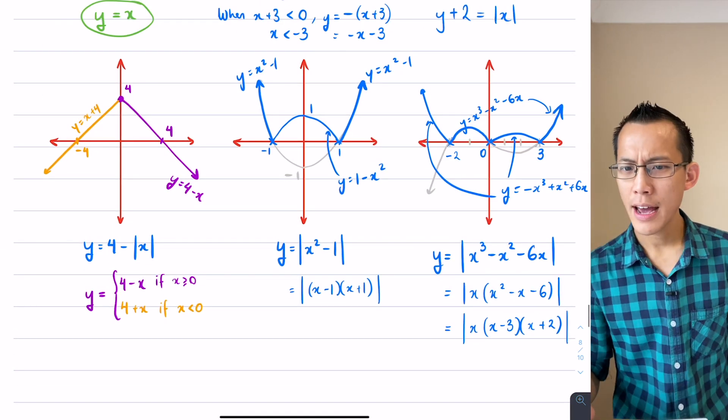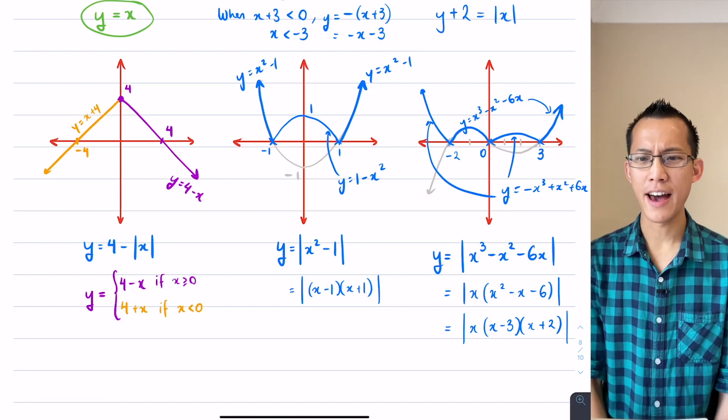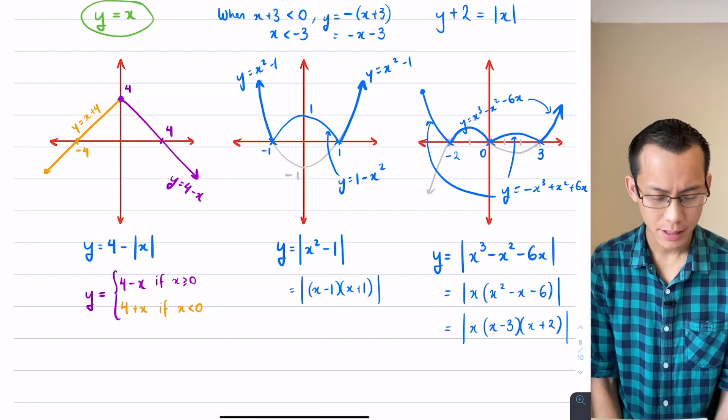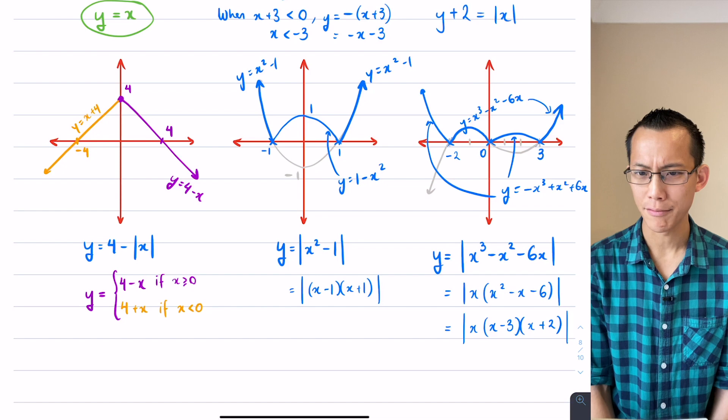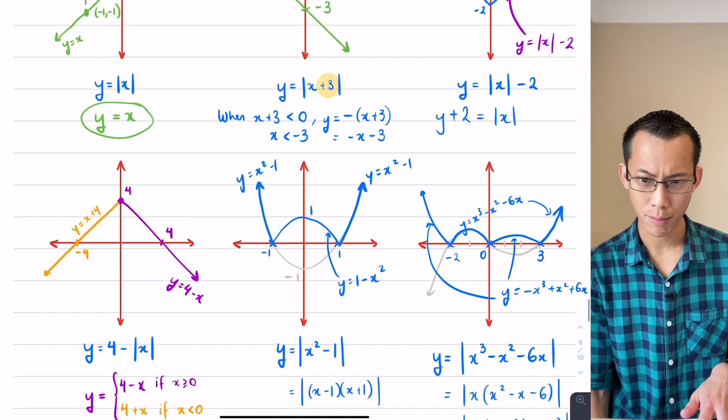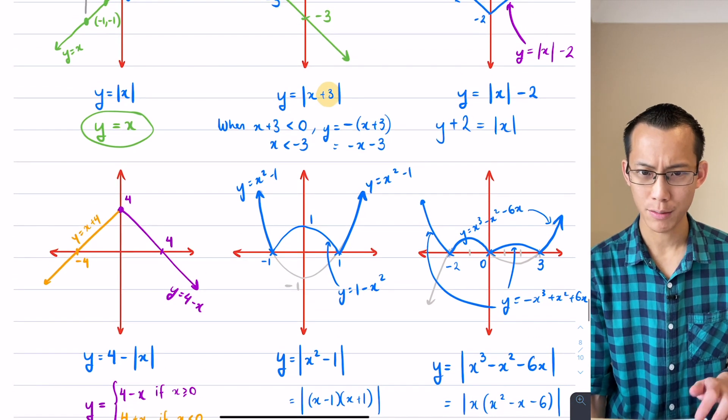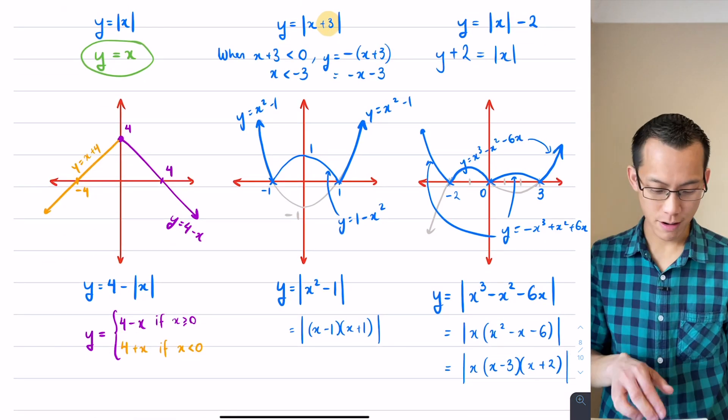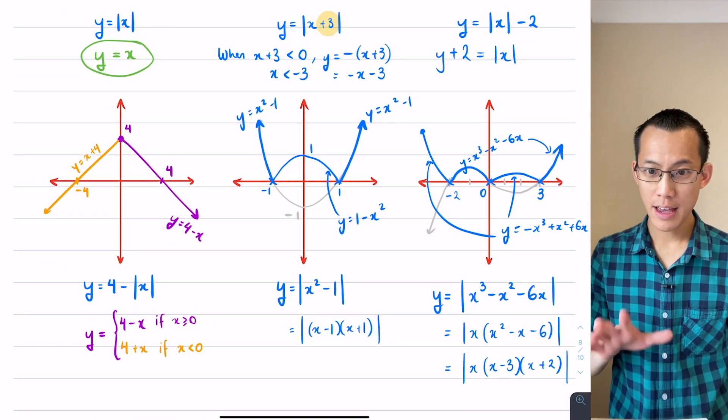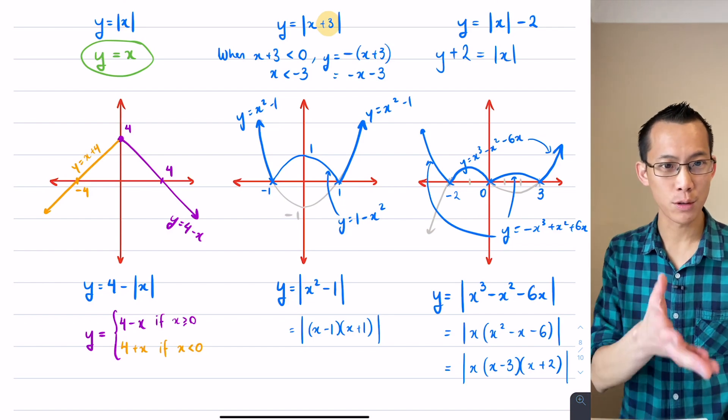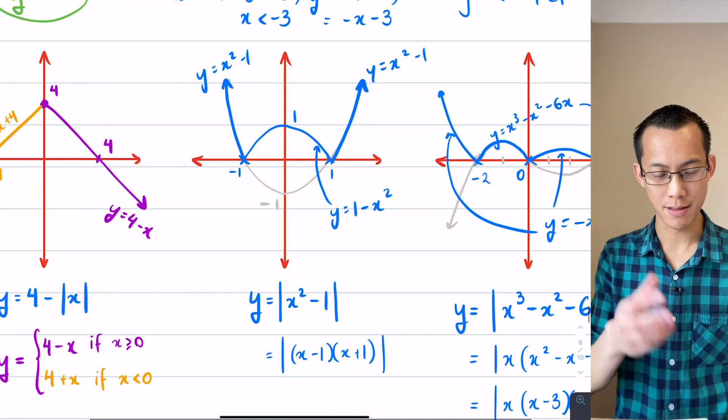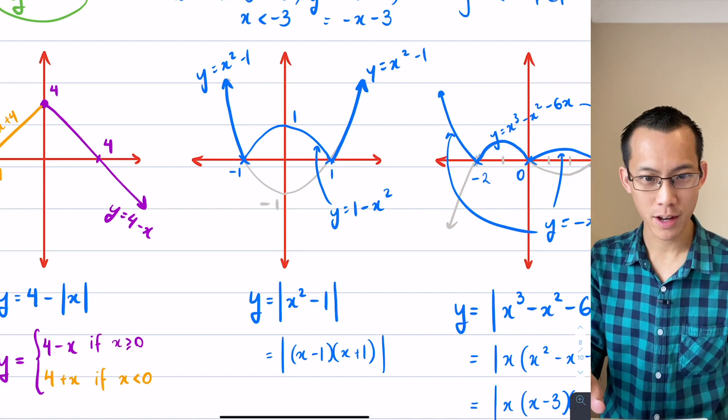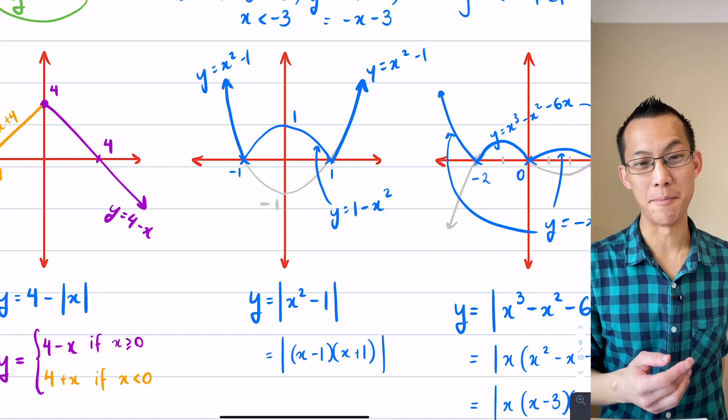I've got a question from Abby in the chat about something going to the right. Which graph are you looking at Abby? Is it the parabola or the cubic? The middle one, okay. Good question.